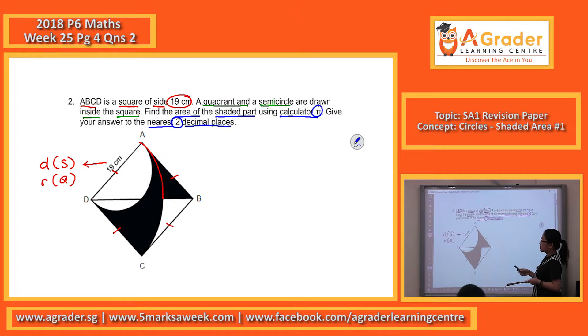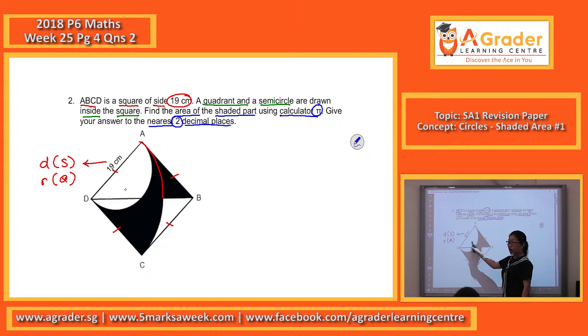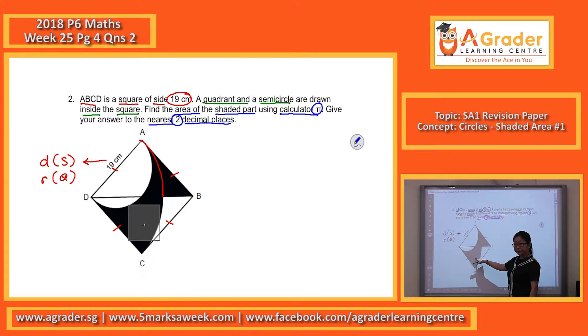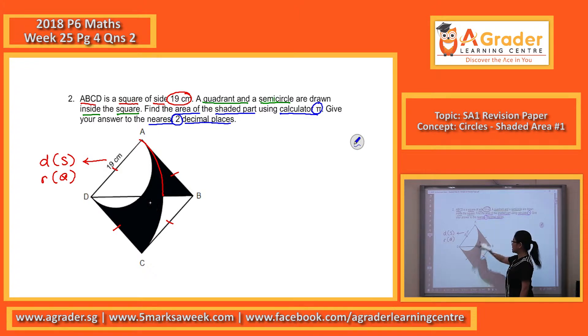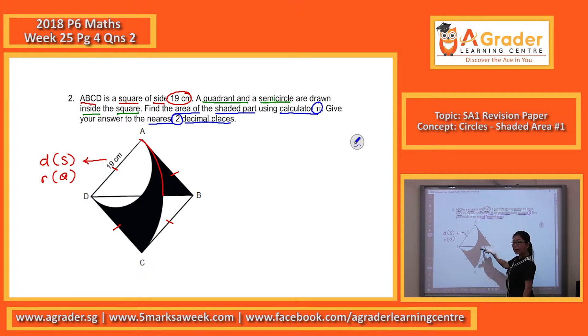So first of all, understand this shaded part that you are trying to find. Actually, with the line drawn, I make it obvious in a way. This quadrant here, if I take away the semi-circle, I will get this part of the shaded. And then, the whole square, if I minus away this whole quadrant, I will get this part.